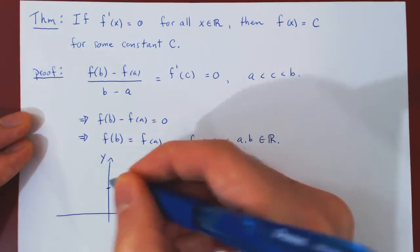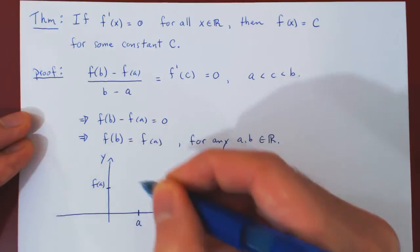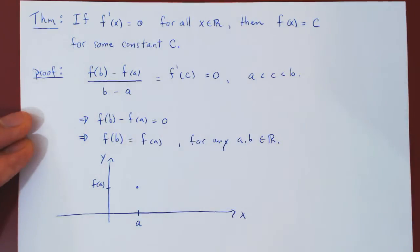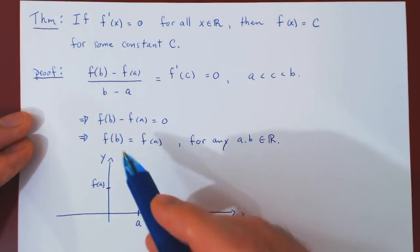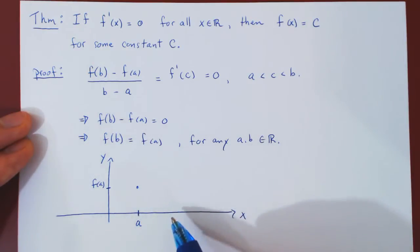Suppose a is here. And this is f of a. And the idea is to think of a as being fixed. So fix a. And now let b vary over all real numbers. So let b vary over the entire real line.